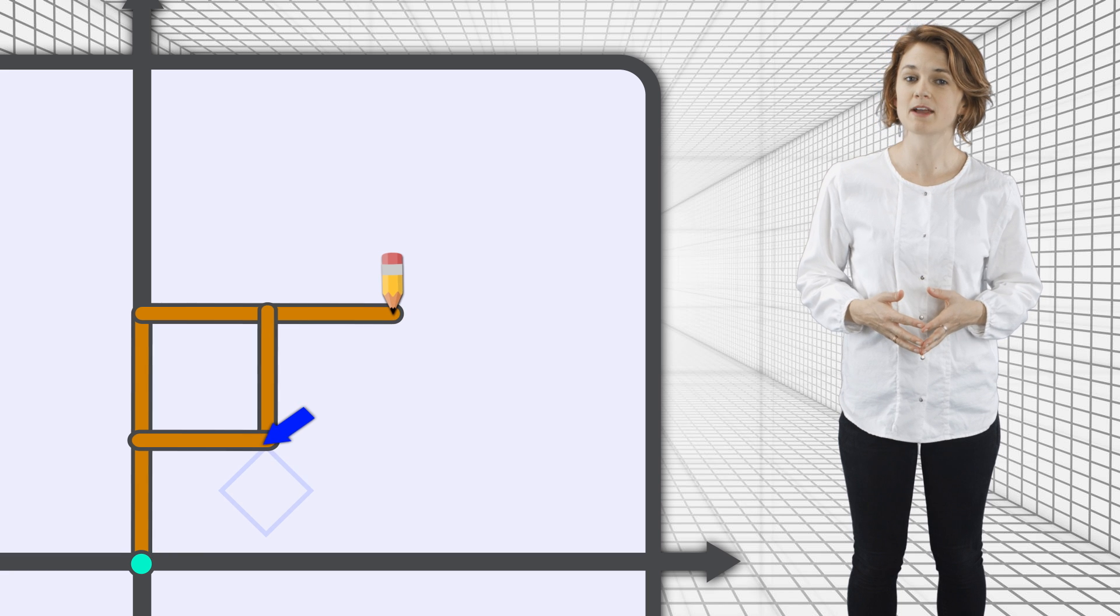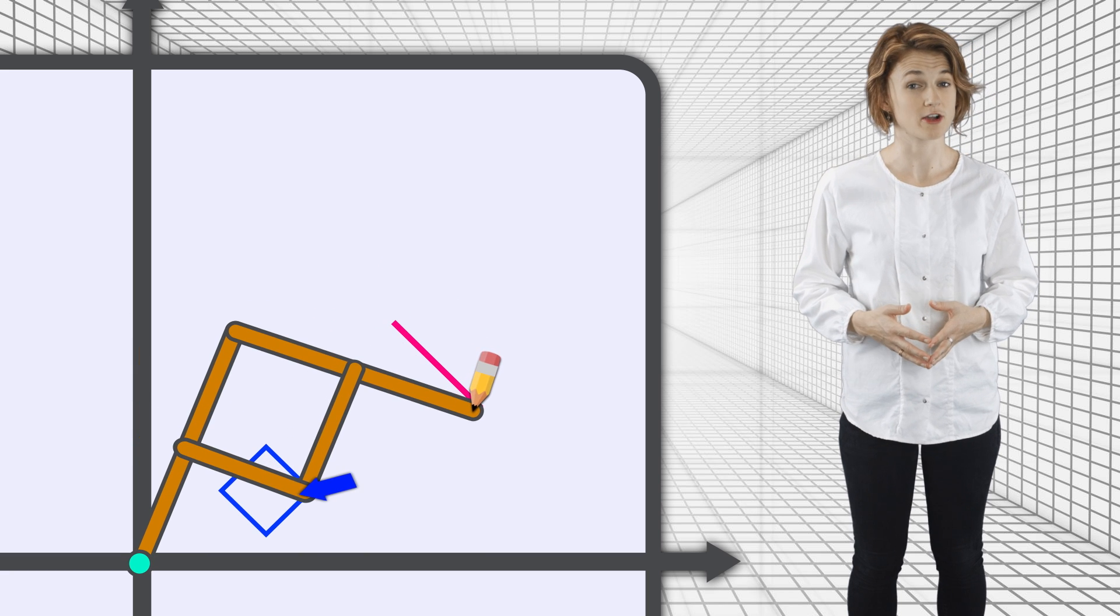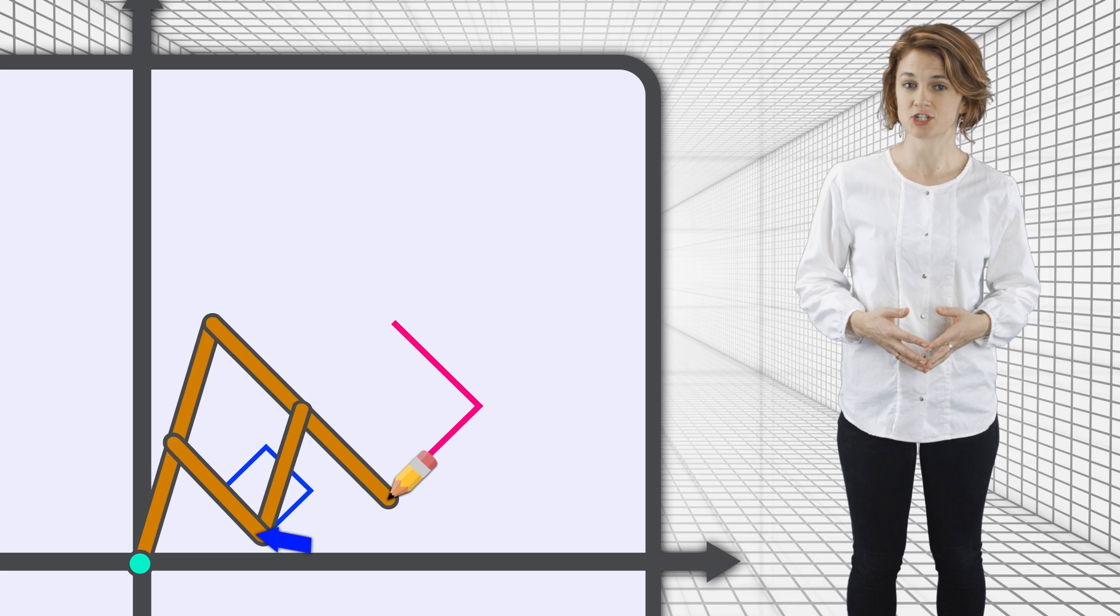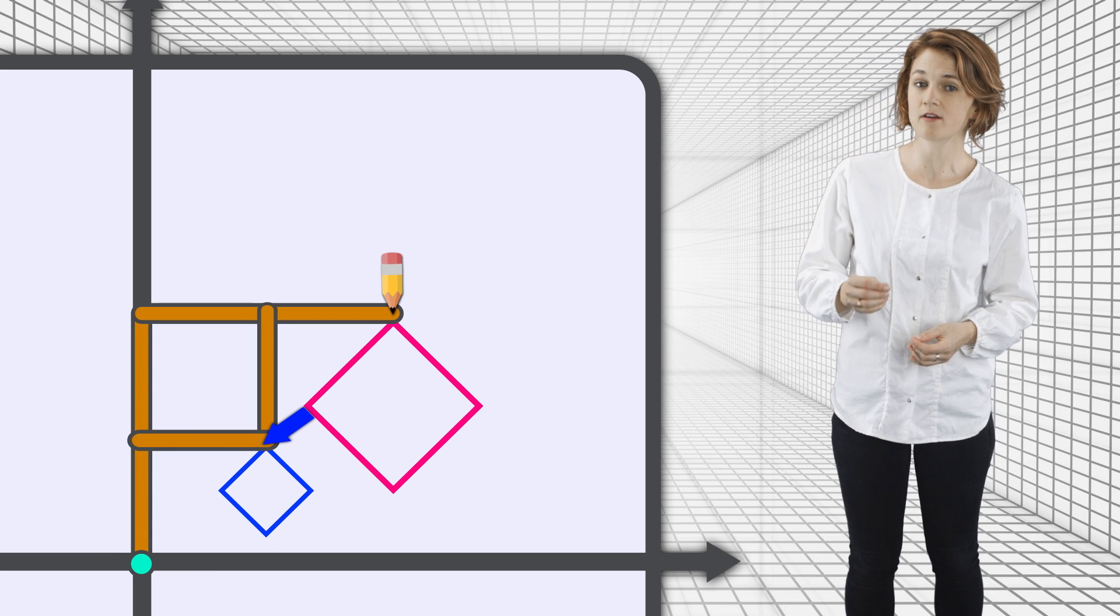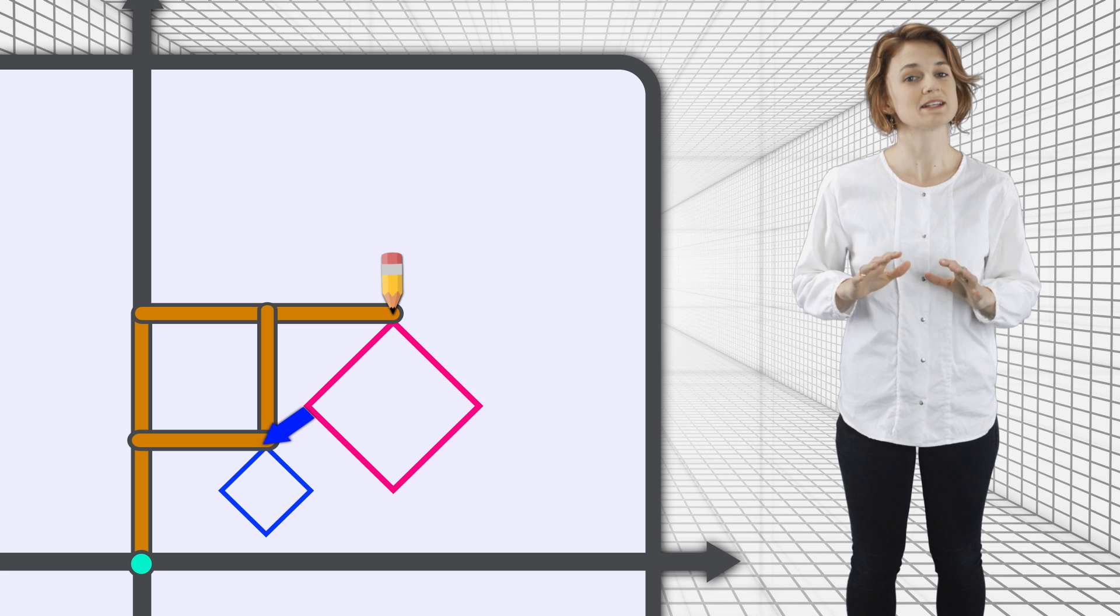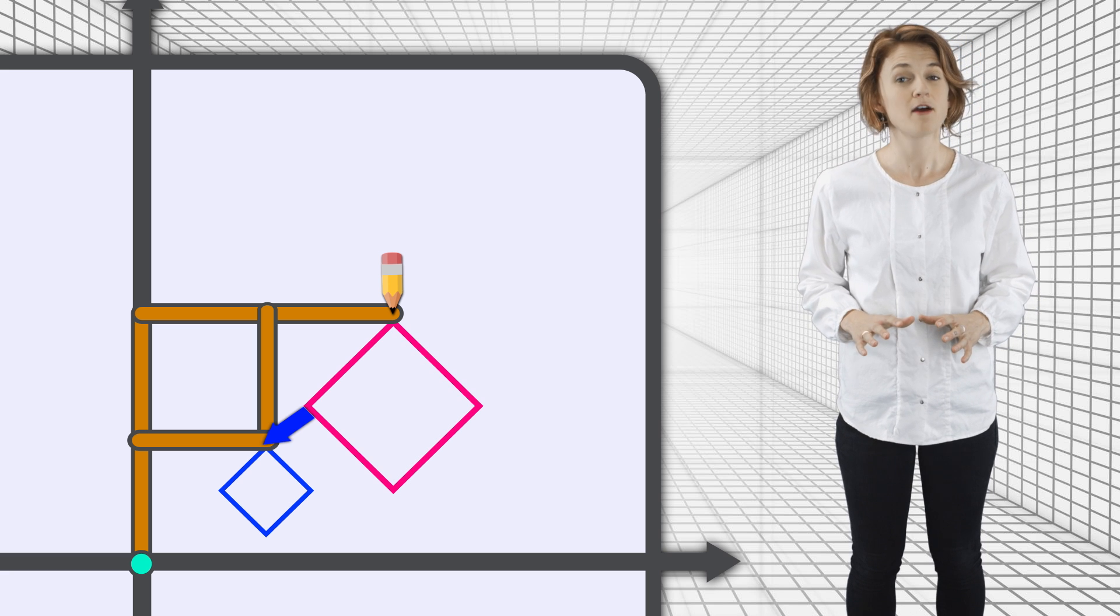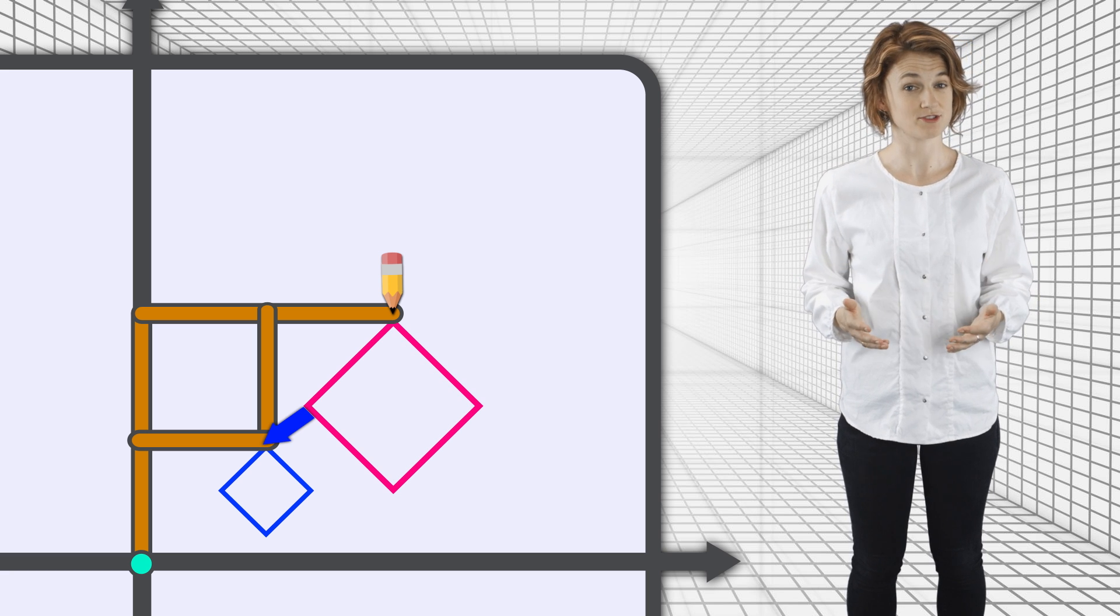Let's say you slide the middle arm of the pantograph along a shape. Each point on that shape is a complex number. The left arm is drawing a double-sized replica of that shape. It's drawing exactly 2 times z for every point z in the original shape.